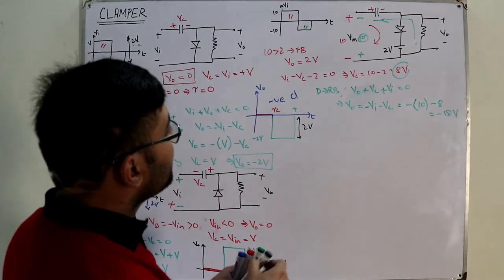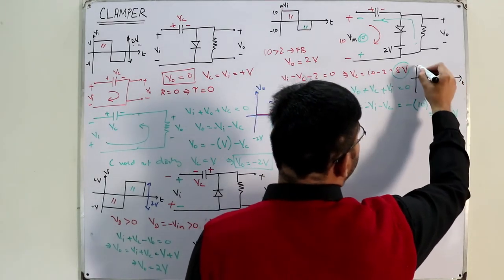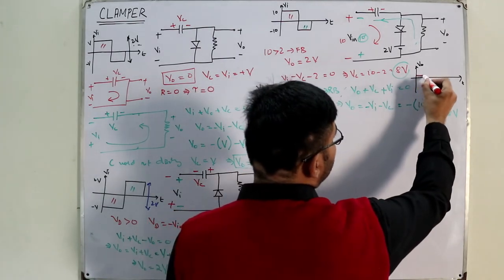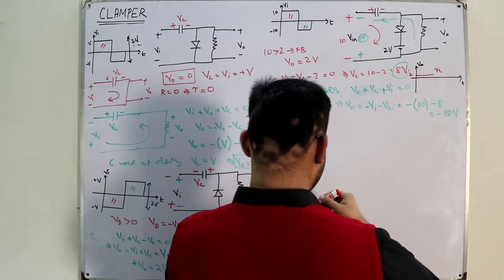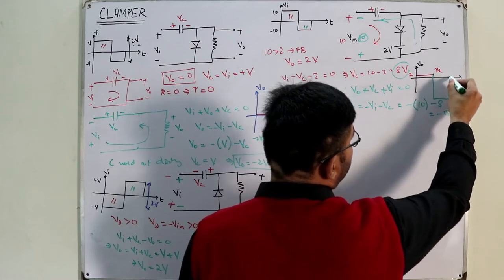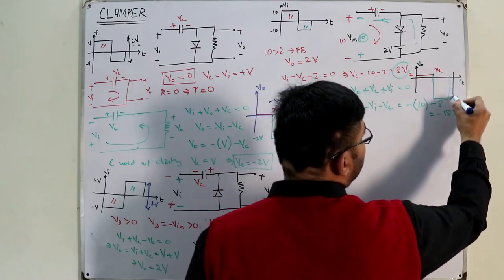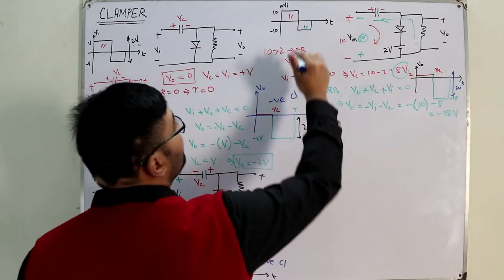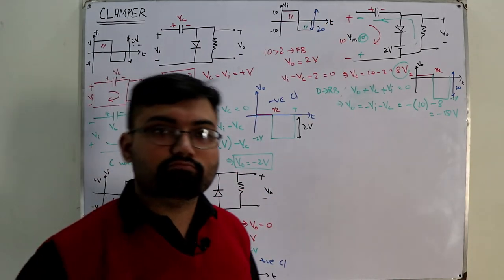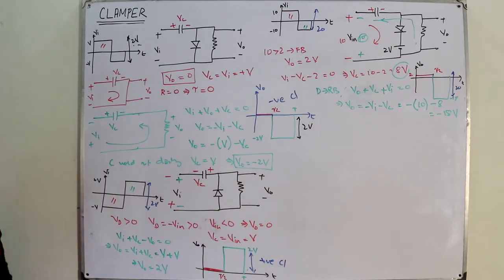Let's draw the output waveform. For the first cycle the output would be 2 volts till T/2, and then it would be minus 18. Now look at the swing: 18 downwards, 2 upwards — the overall swing is 20. Over here the input has 10 upwards and 10 downwards — overall swing is 20. Only shifting without changing the appearance of the waveform.